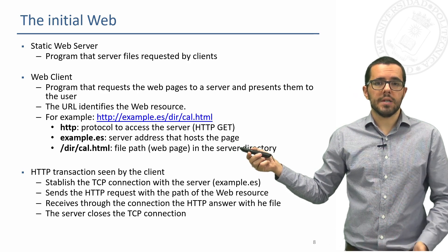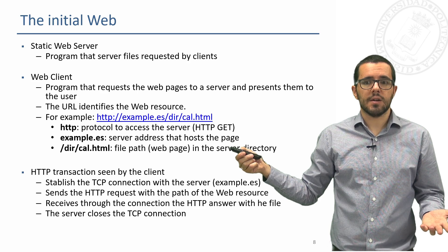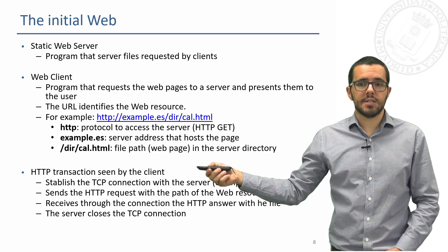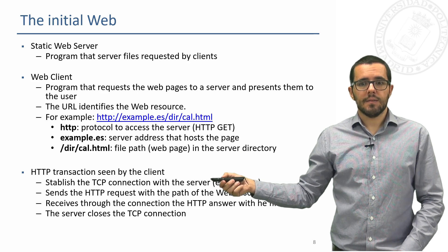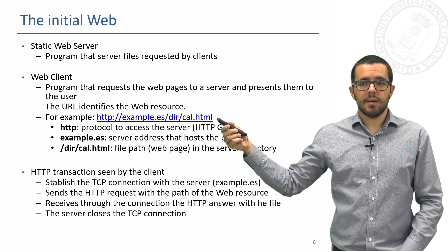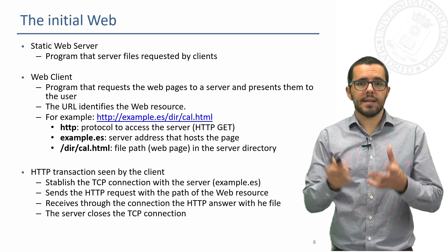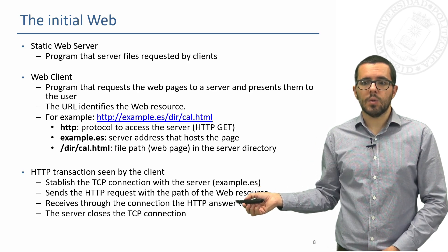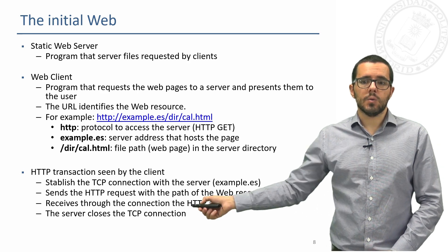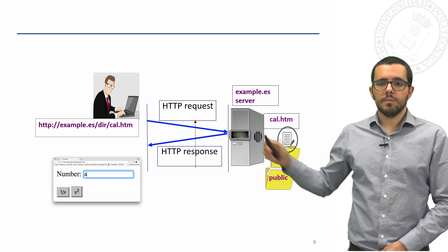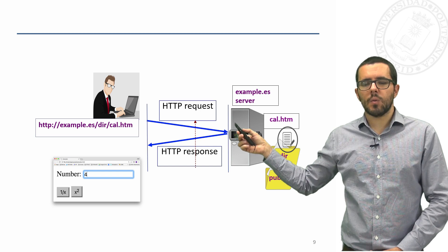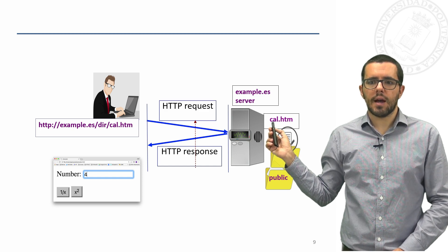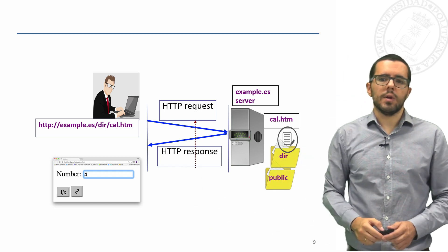The server address, with DNS, will resolve to an IP address, and there is also the path of the web page or web resource that the client is requesting. This HTTP transaction seen by the client is: establish a TCP connection with the server, send the HTTP request and this path, the server analyzes the content, checks if it has the file, and if it does, it sends it over HTTP. Finally, it closes the connection. In simpler terms: HTTP request, server analysis, and HTTP response — it sends the requested file and the client shows a calculator in the browser.